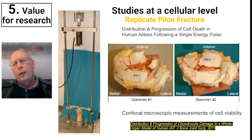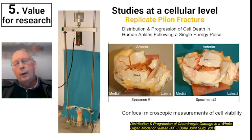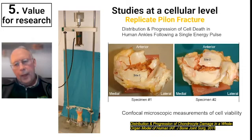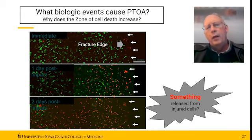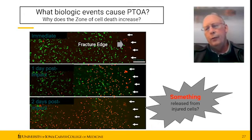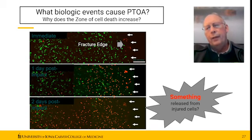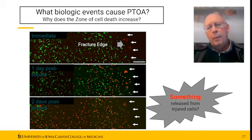That gets me to my last few slides arguing that these particular ankle fractures — where you can have an outcome relatively early — are very good prospects for studying candidate biological interventions. Here are cadaveric impaction injuries of the distal tibia — experimental pilon fractures, if you will. There's the fracture edge pictured on top. Green cells are live cells, red cells are dead cells, and there is a slow progression over two days from living cells to dead cells, implying that something is happening and that maybe that something would be a possibility of an intervention.